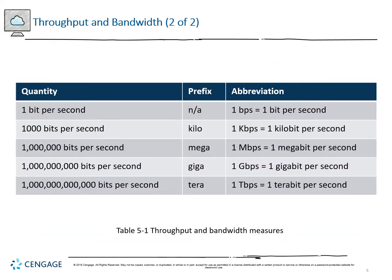One bit per second is abbreviated as one BPS. A thousand bits per second is a kilobit per second. A thousand kilobits, or a million bits, is a megabit. A thousand megabits is a gigabit, and a thousand gigabits is a terabit. Currently, international underwater fiber optic cables can transfer around 60 terabits per second for some of the thicker ones. There's an eight-cable bundle from Spain to Virginia Beach owned by Facebook and Microsoft called the MAREA cable — about 4,400 miles long, running around 60 terabits per second.